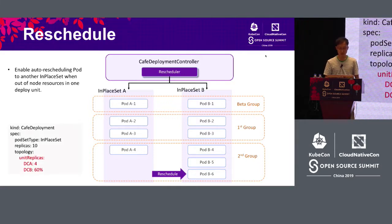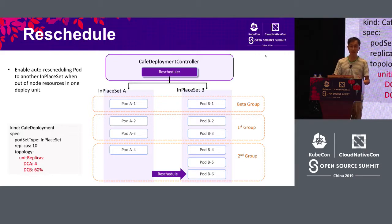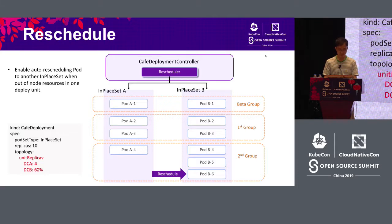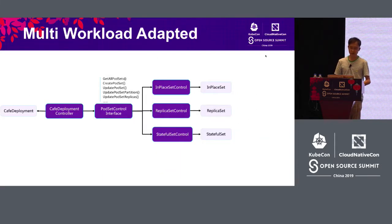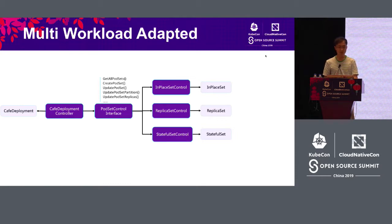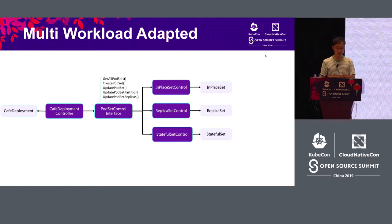Some customers can close the rescheduling configuration if they don't need it. If a customer wants four pods in one data center and the others in a different in-place set, that can be specified — for example, DCA four pods and DCB 60% of the pods. The Cafe Deployment works through a port set control interface and uses this interface to work on the bottom workload like replica sets.